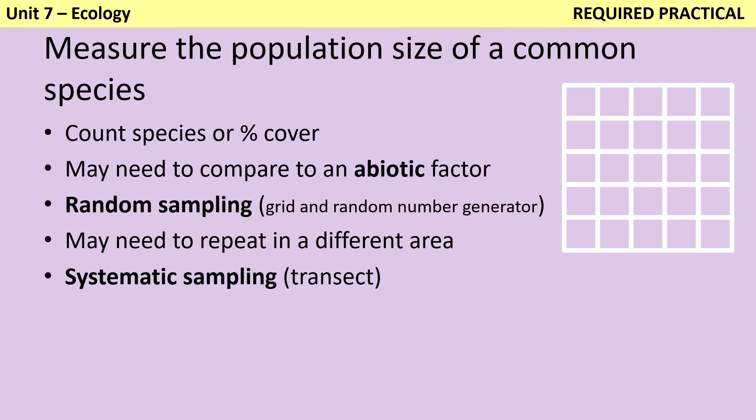The first required practical in unit seven is the sampling required practical, and this one is for everyone including the combined scientists. The required practical centres around measuring the population size of a common species, something like clover or daisies, usually in response to an abiotic factor like light, moisture content or pH — although there have been examples of questions involving humans trampling, which would technically be a biotic factor. To estimate the population size, we use a quadrat — a square frame that often has divisions inside to allow you to estimate what percentage of that quadrat is covered by a particular species.